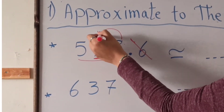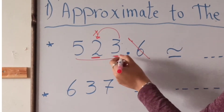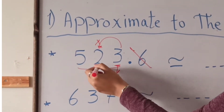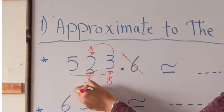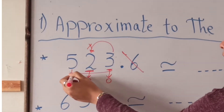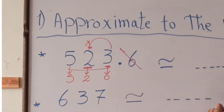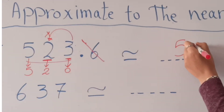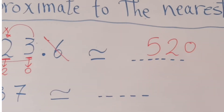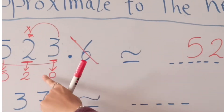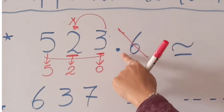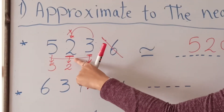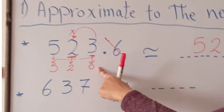Since 3 is poor, it can't help 2, so it will not give 2 anything. Then 3 will become 0 and 2 will stay as 2. So the approximation of this number will be 520. Remember that all the digits to the right of the approximation digit are converted to 0.